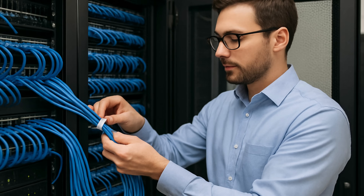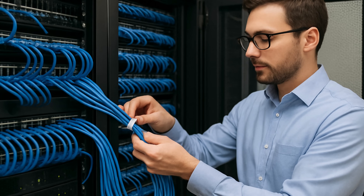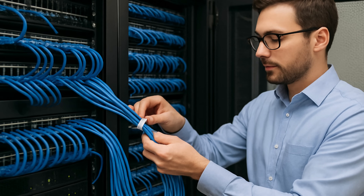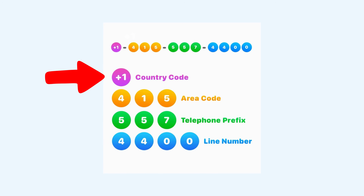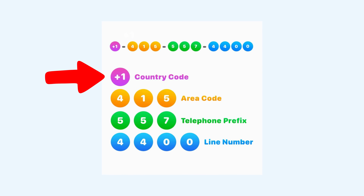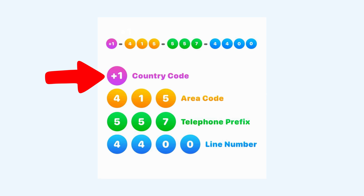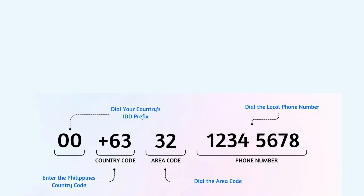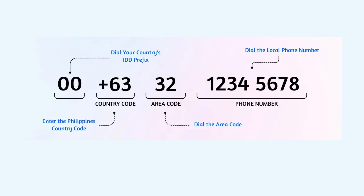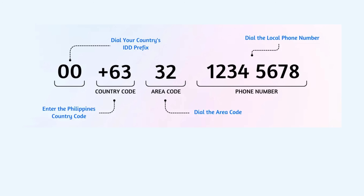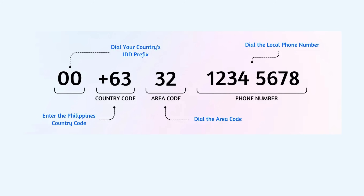Technicians reconfigured switches to recognize international prefixes and automate connections. The introduction of the plus sign, signaling a call leaving the local network, made the process universal. Combined with a country code, it allowed phones everywhere to recognize destinations instantly, bridging networks across the world.